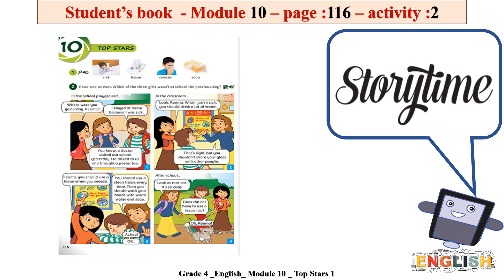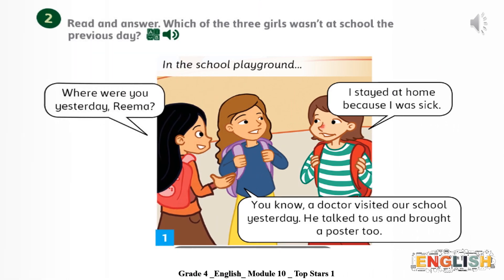Now it's story time. Open your student book and pay attention to activity number two. Are you ready? Read and answer: which of the three girls wasn't at school the previous day? In the school playground...